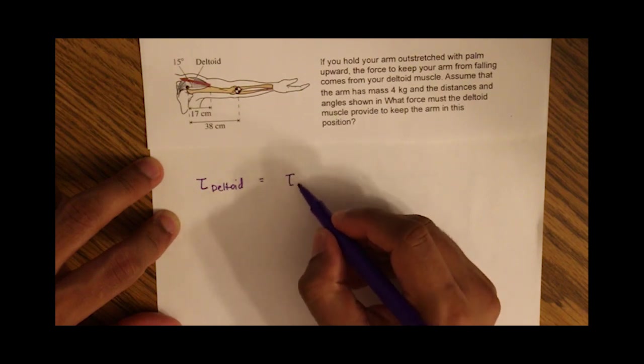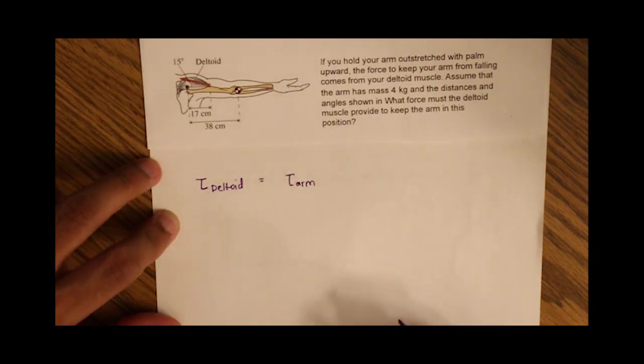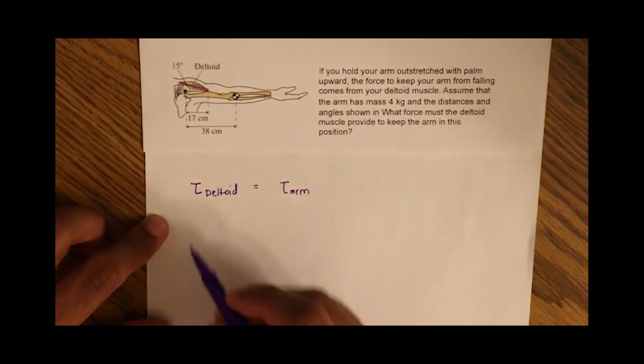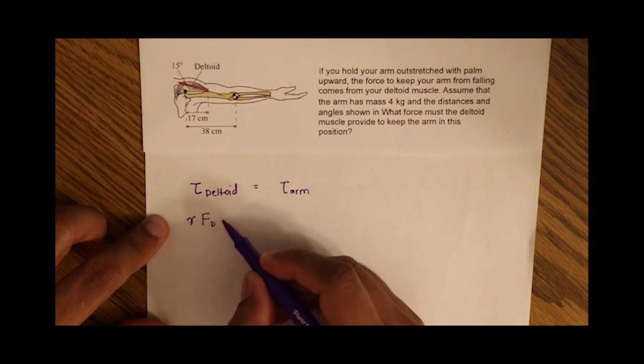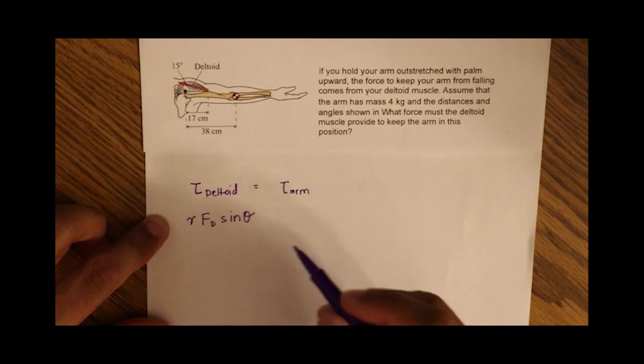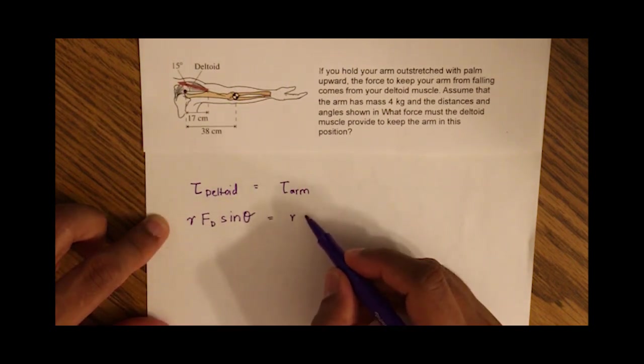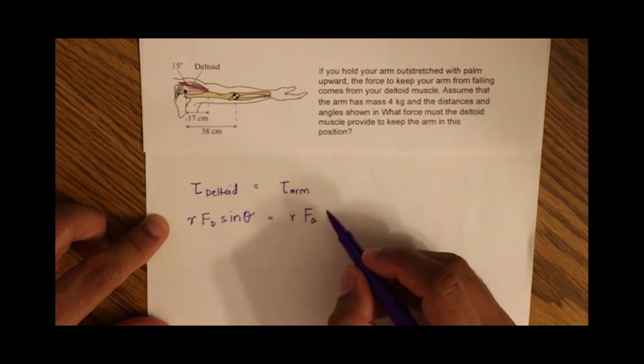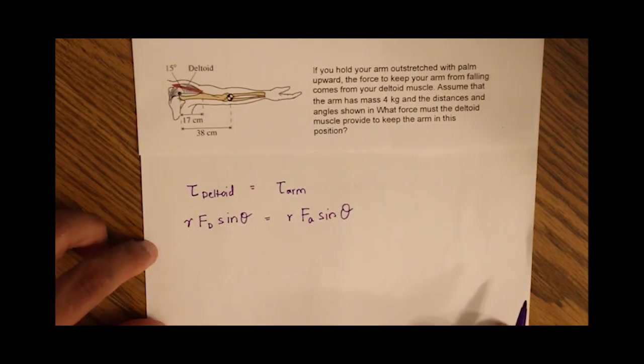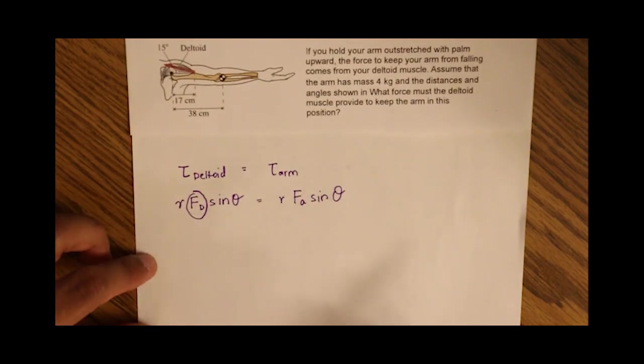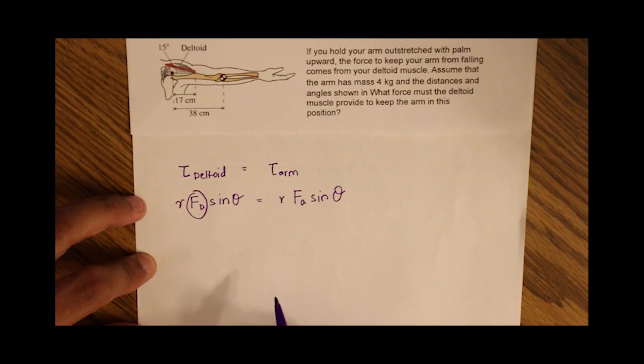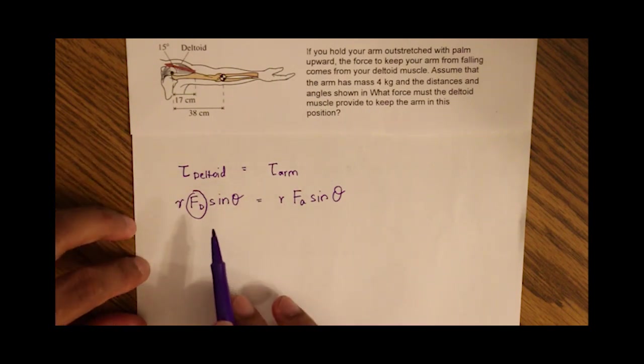So torque deltoid equals torque arm. We know the formula for torque is r times F of deltoid times sine theta, and is equal to the radius times the force of the arm times sine theta. We are asked to find the force of the deltoid, so we can solve algebraically.